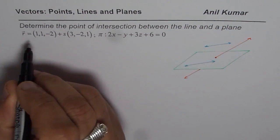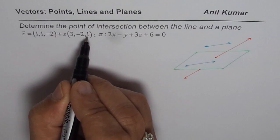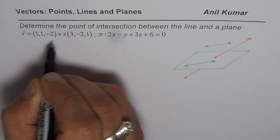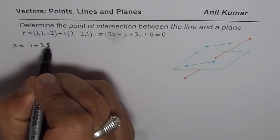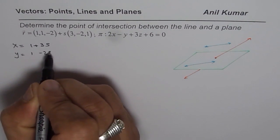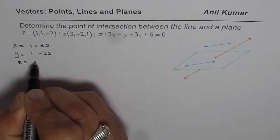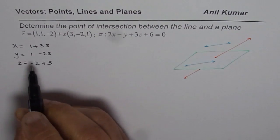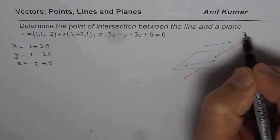So we have R equals to 1, 1 minus 2, S times 3 minus 2, 1. Let us find the parameter value S. So, x in general will be 1 plus 3S. Y value will be 1 minus 2S. And z value will be minus 2 plus S. So that is any point on the given line for us. And that is the line we are considering.